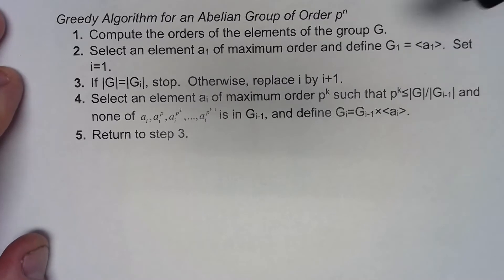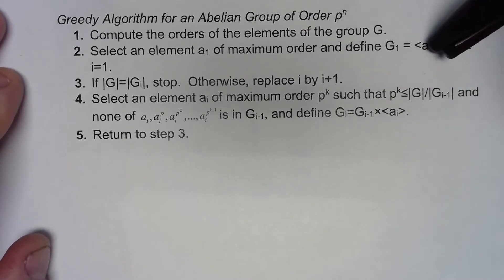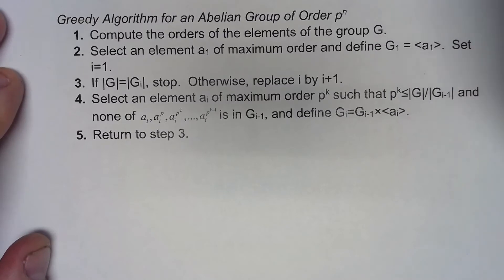Now we want to take a look at a method for determining how to break down a particular abelian group. This is not only going to give us what it's isomorphic to, but it's actually going to tell us exactly what the internal direct product is.